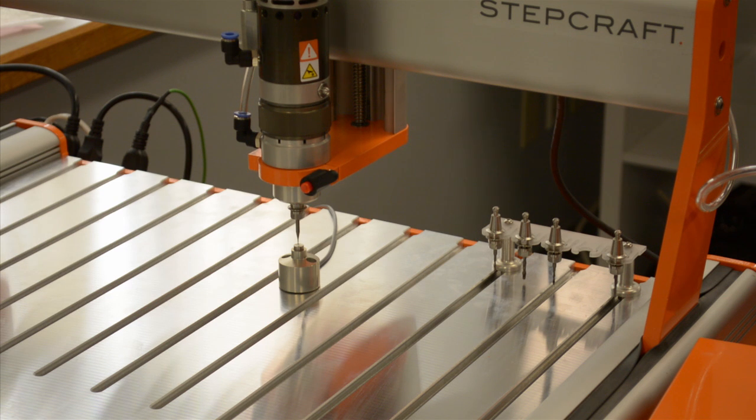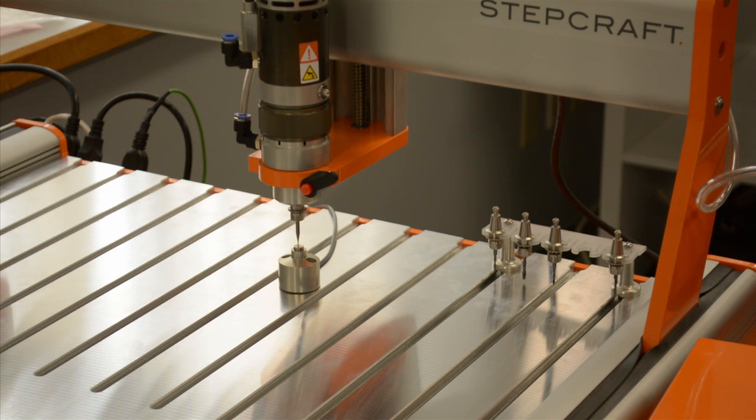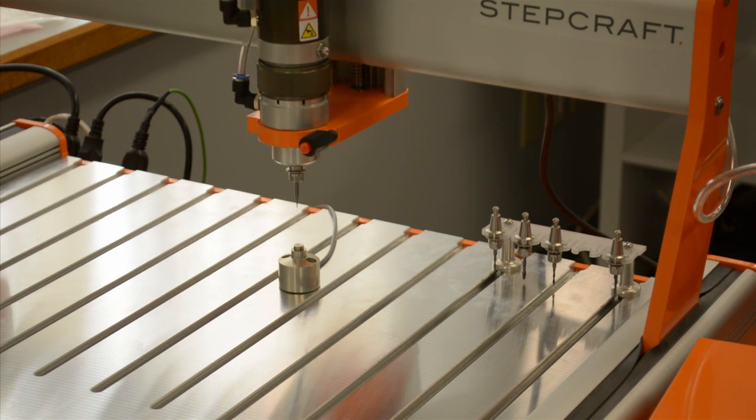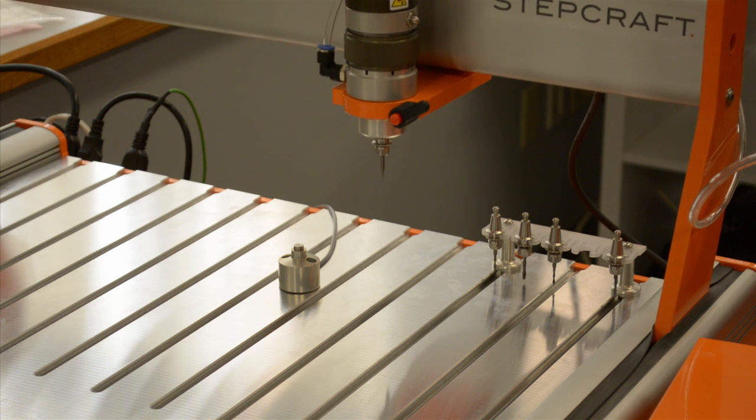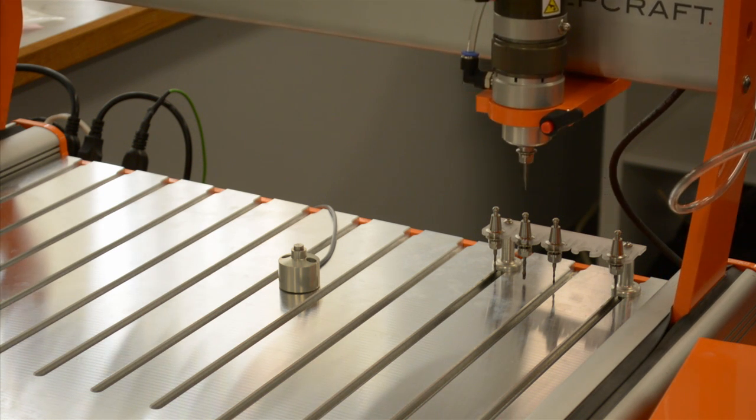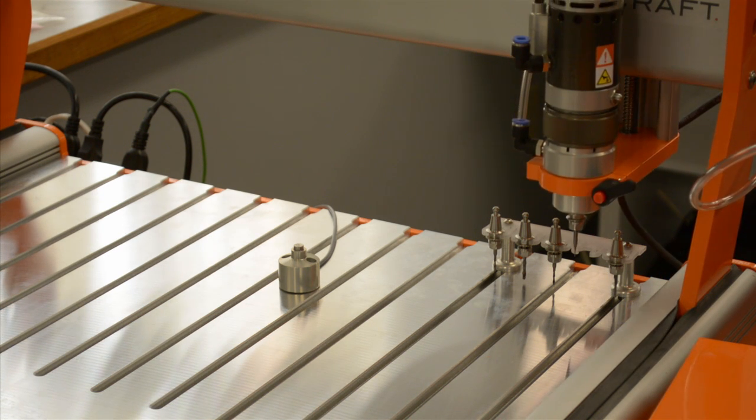As you can see, the macro is now touching off tool number 2 to adjust the proper Z height for the tool. The macro is going to go through each tool on the tool holder and adjust each Z height for each tool.